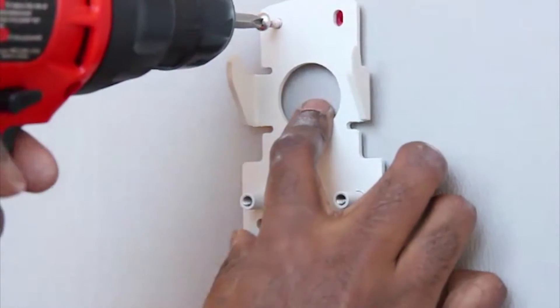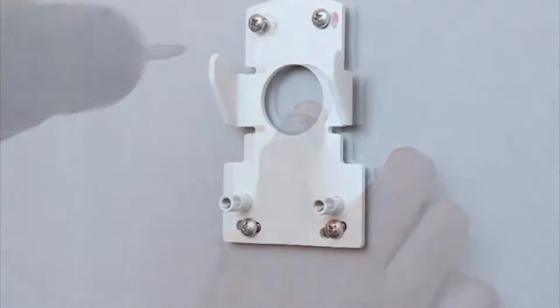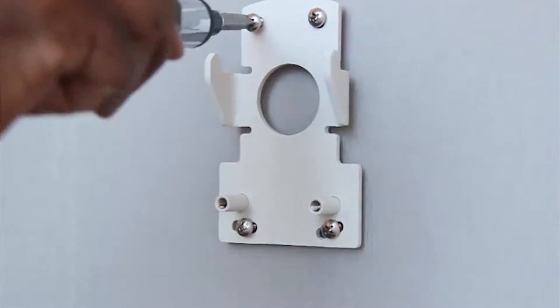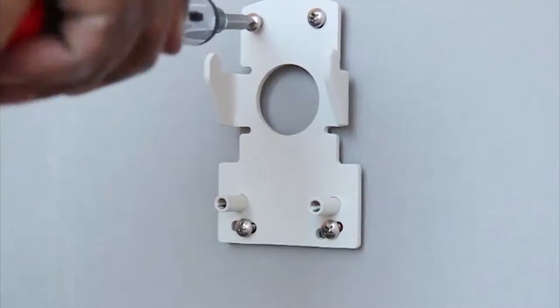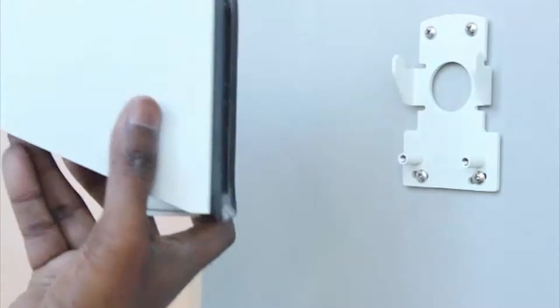Fasten the pendant wall mount bracket to the mounting surface. Then, insert the pendant wall mount over the bracket mounting tabs.